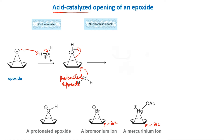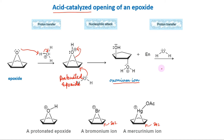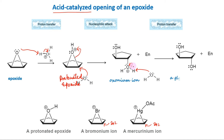The necessity for backside SN2 attack explains the observed stereochemical preference for anti-addition. In the final step of the mechanism, the oxonium ion is deprotonated to yield a transdiol. Notice that water, rather than hydroxide, is used to deprotonate in order to stay consistent with the conditions. In acidic conditions, hydroxide ions are not present in sufficient quantity to participate in the reaction, and therefore they cannot be used when drawing the mechanism.